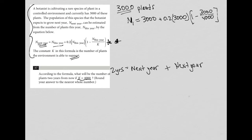So what I have here, when I simplify, is 3,000 plus 0.2 times 3,000 times, well, 3,000 divided by 4,000 is 0.75. 1 minus 0.75 is 0.25.